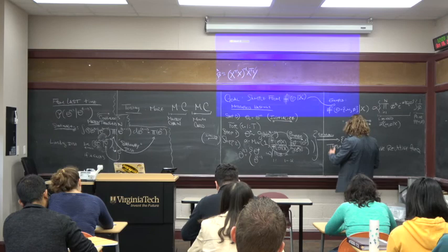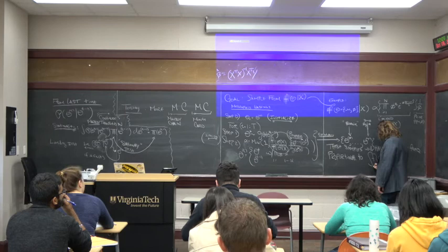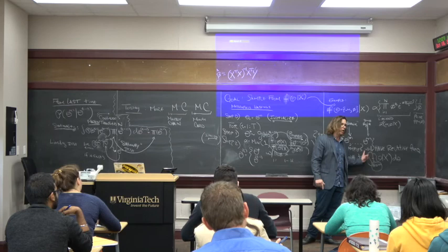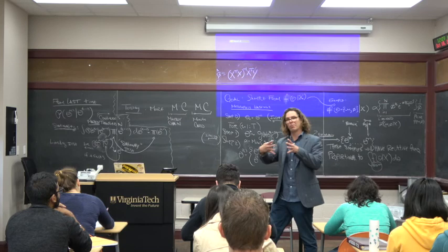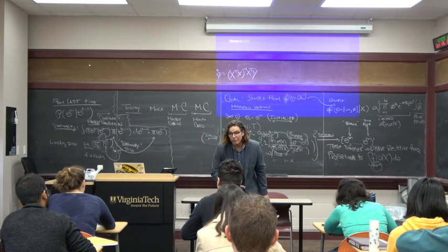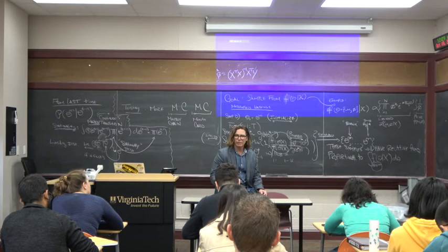These samples will have relative frequency proportional to our target distribution F theta. If I want to integrate over some region, the frequency of the samples I get in that region will approximate that integral — the area under that curve, which is the probability of being in that area. That's a totally frequentist thing, and all these iterative algorithms are frequentist, governed by all those frequentist statistics that you learned about.